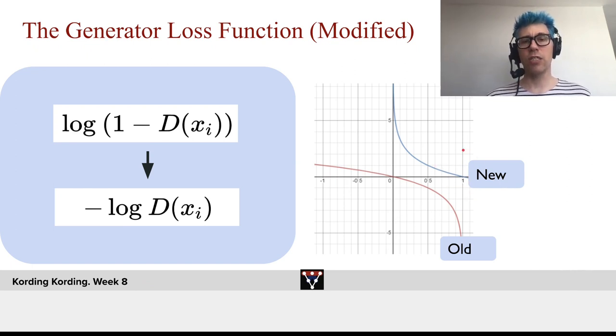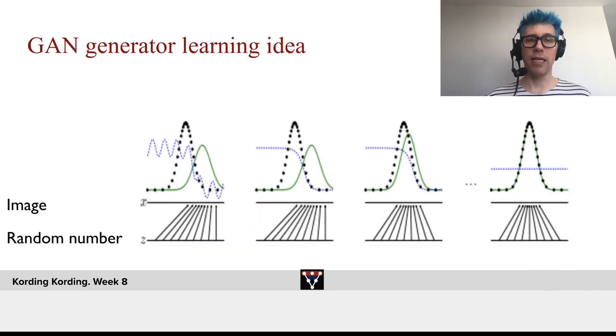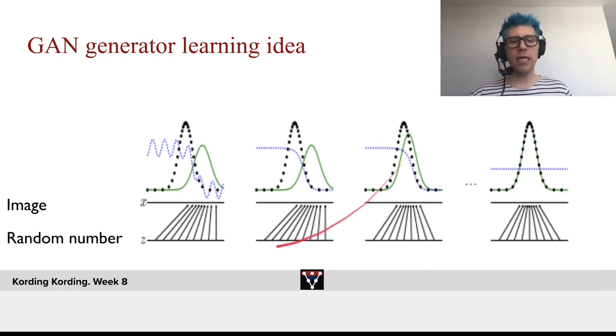So that is the cost function that people then often use for GANs. Now what's the GAN learning idea when we talk about probability distributions? What goes in is a random number. Maybe what we want to have is a probability distribution like the green one here. And what we are learning is effectively a mapping of a random number into the space X, so that ultimately after learning the two distributions are the same, and therefore we have ongoing low loss.